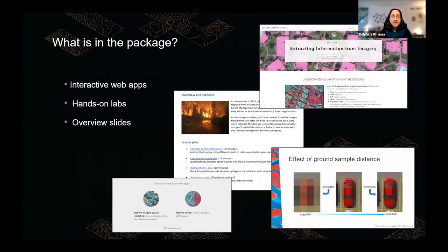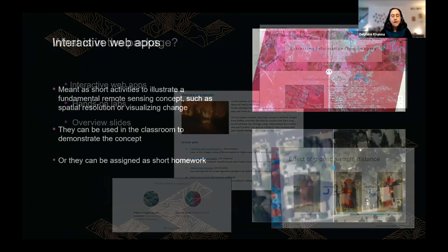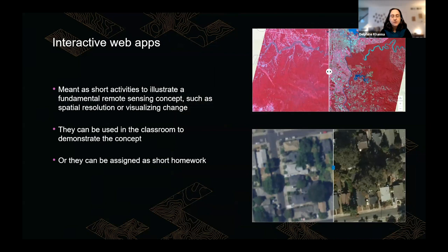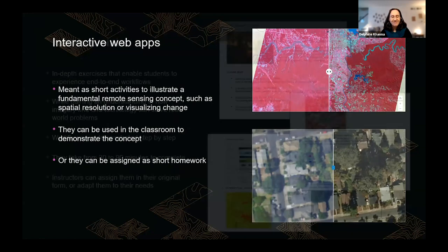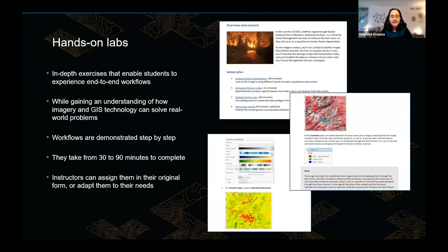There are three types of learning materials in the package: interactive web apps, hands-on labs, and overview slides. The interactive web apps are short activities to illustrate fundamental remote sensing concepts such as spatial resolution or visualizing change — you can use them in class or assign as short homework. Hands-on labs are in-depth exercises enabling students to experience end-to-end workflows, taking 30 to 90 minutes to complete. You can assign them as-is or adapt them to your teaching needs.